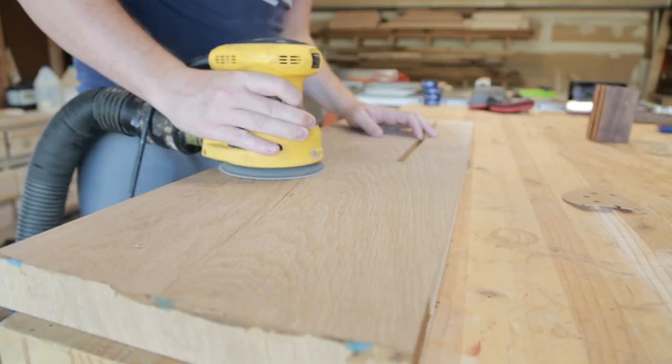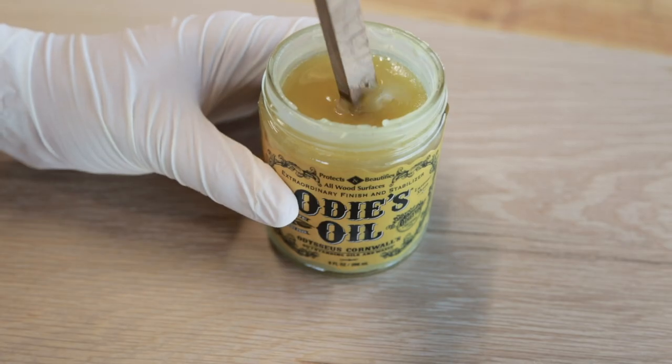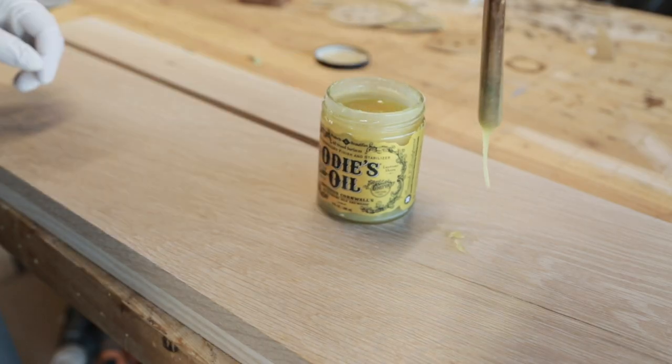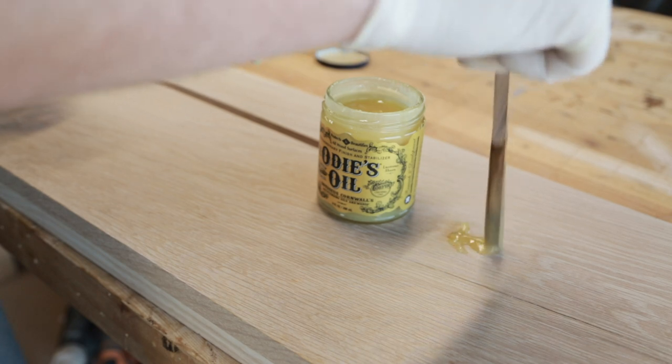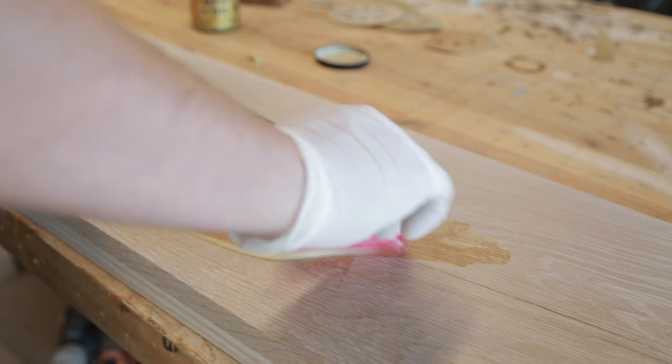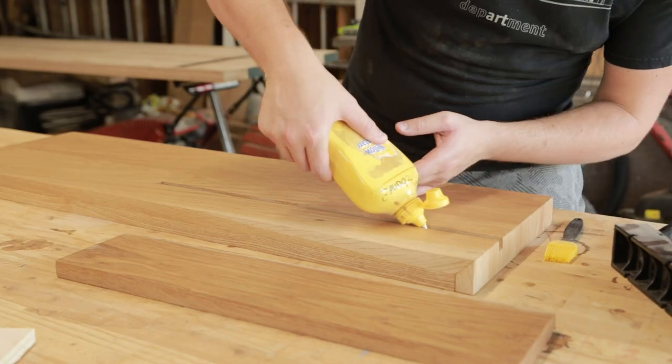Now it's time for the finishing touches. I sanded the backboard up to 320 grit and then 400 grit by hand. I typically don't sand that high, but for this project, I'm using Odie's oil for the first time, as I wanted to use it on a future project. After using Odie's on this, I can really get used to using this as a finish. It's very easy to apply and I like the natural feel to the finish.